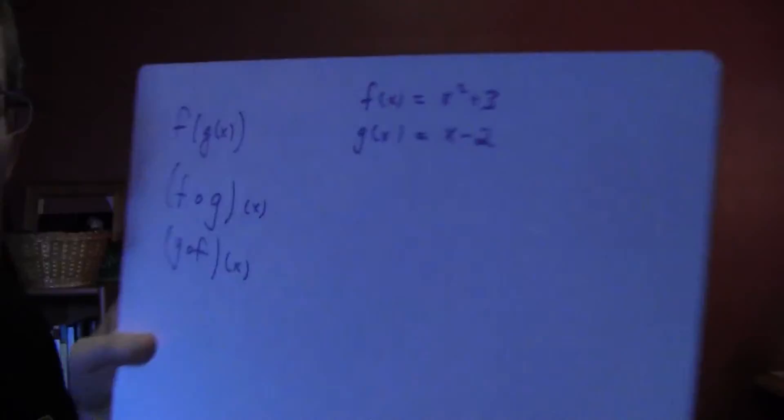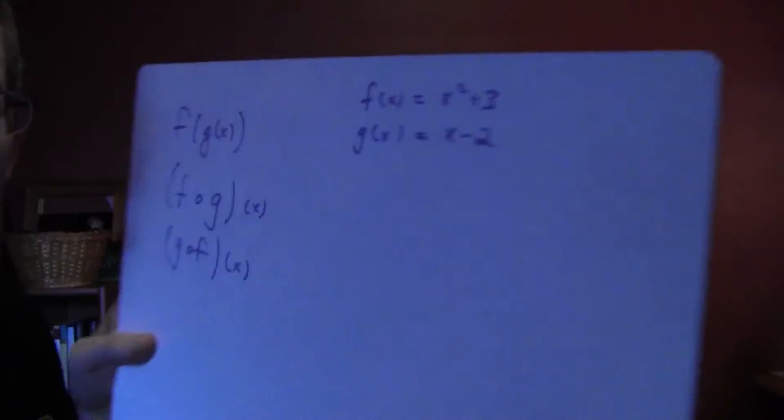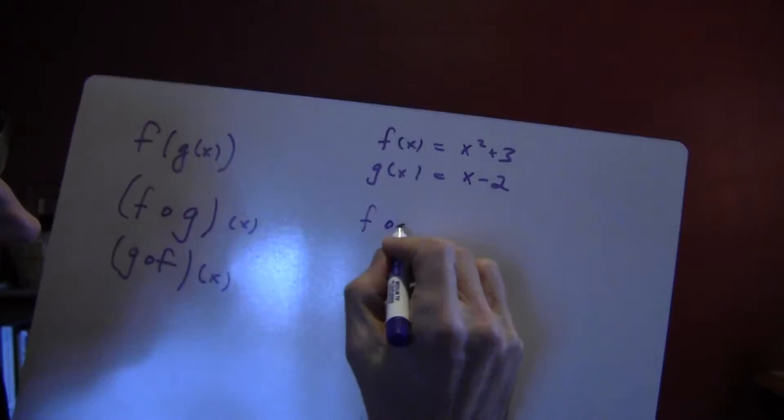Then, the second problem, style problem, because it's a little more complicated, is instead of evaluating it at a particular point, they just ask you to just solve it in general. So, there's no point 3. They're just saying, just tell me what is, I hope this angle isn't too bad. Just tell me what is f composed with g of x.